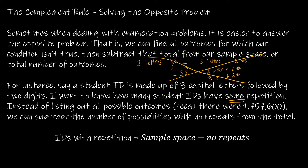We already know the sample space and we already know how many have no repeats. Assuming you're joining from video 6.1.1, we found that the sample space — with no restrictions — is made up of three capital letters, so that's 26 × 26 × 26, or 26³, followed by two digits, so times 10². For no repeats: the first position has 26 options, the second has 25, and the third has 24, because we've already used letters in the prior positions.